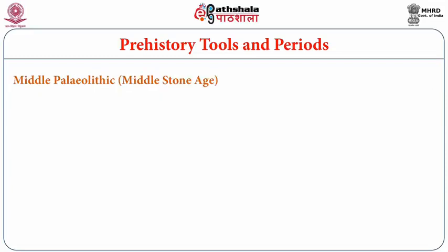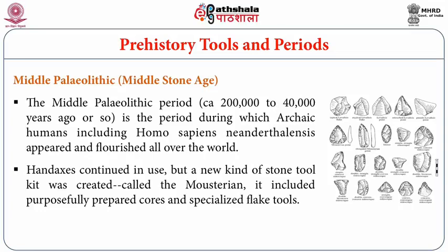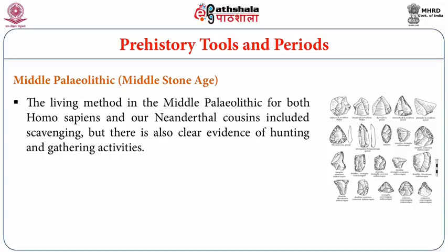The Middle Paleolithic, also known as the Middle Stone Age, lasted between 200,000 to 40,000 years ago, during which archaic humans including Homo sapiens and Neanderthalensis appeared and flourished. Hand axes continued in use, but a new stone toolkit called the Mousterian was created, including purposefully prepared cores and specialized flake tools. The living method included scavenging, but there is also clear evidence of hunting and gathering. Both anatomically modern humans and Neanderthals also invented Levallois technology during this period.